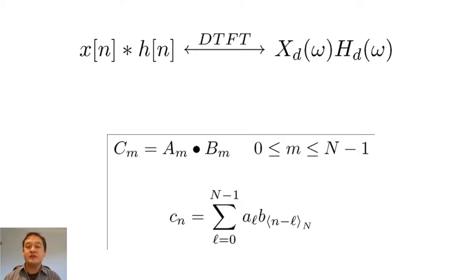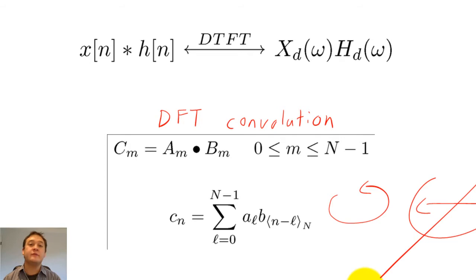The convolution of two signals is different when we use the DFT, because x sub n is periodic. The normal convolution formula performs cyclic convolution rather than linear convolution. We will discuss the complications that result from cyclic convolution, as well as how to perform linear convolution when using the DFT later.